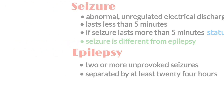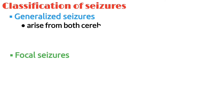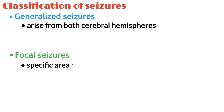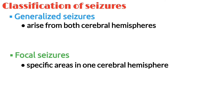Seizures are classified mainly into generalized and focal seizures. Generalized seizures arise from both cerebral hemispheres at the same time, while focal seizures arise from specific areas in one cerebral hemisphere.